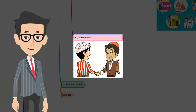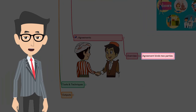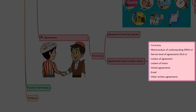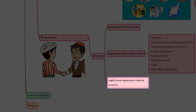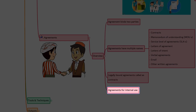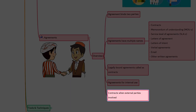Now let's talk about agreements, the next input. Agreements represent a relationship between two parties — this obligates the seller to provide the specified product, service, or results and obligates the buyer to compensate the seller. Agreements have multiple names such as contracts, memorandum of understanding, service level agreements, letter of agreement, letter of intent, verbal agreement, email, or other written agreements. When agreements become contracts, contracts legally bind two parties. But remember, just an agreement alone won't bind two parties — it's a contract that binds two parties. Agreements are mostly used for internal purposes, to define the initial intention of the project. Contracts are used when external parties are involved.